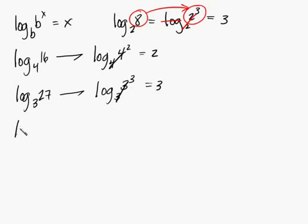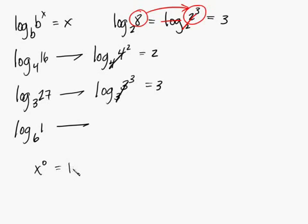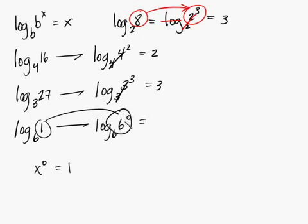How about log base 6 of 1? Well, this can be written as 6 to what power gives you 1? Any number raised to the 0 power equals 1. So in this case, it'd be log base 6 of 6 to the 0 power. The 6's cancel and you're left with 0, because 6 to the 0 power is equal to 1.